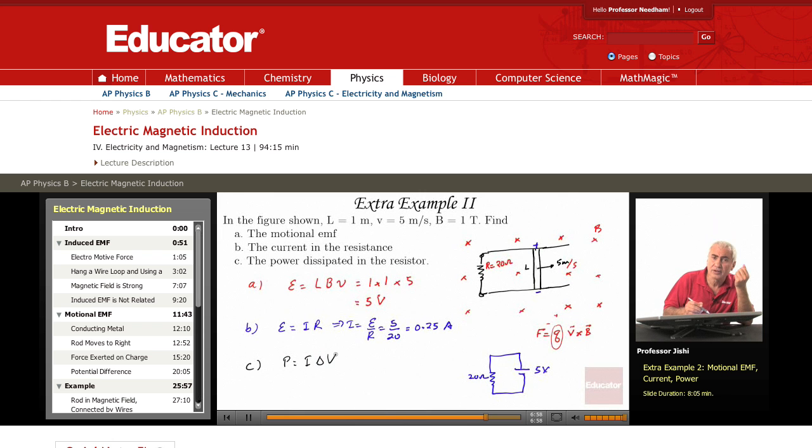I is 0.25 amperes and delta V, the potential difference across the resistor, is 5 volts. It's the same as. So this is 1.25 watts.